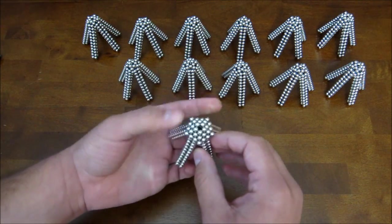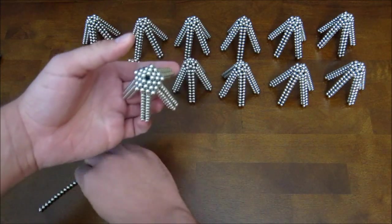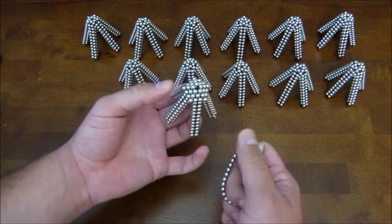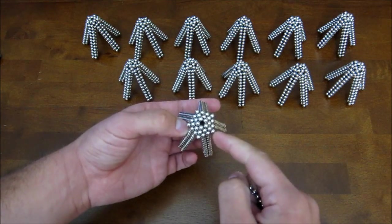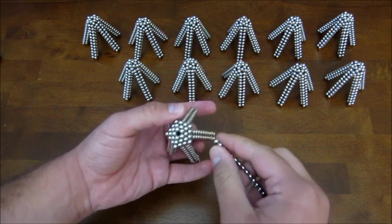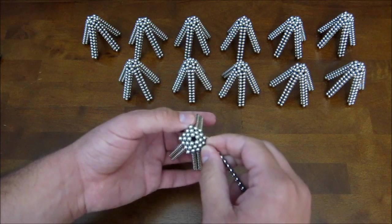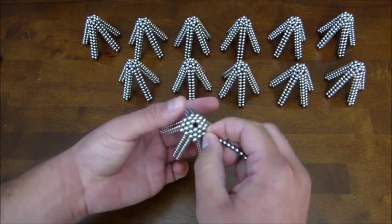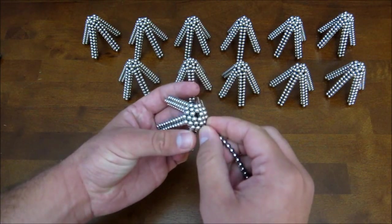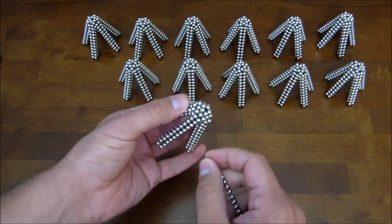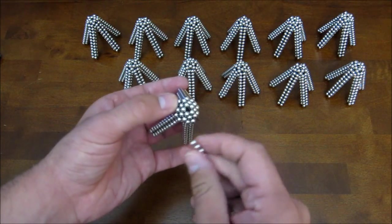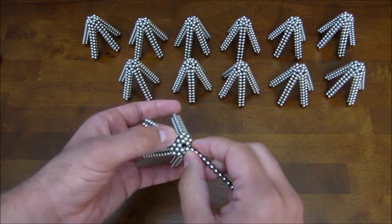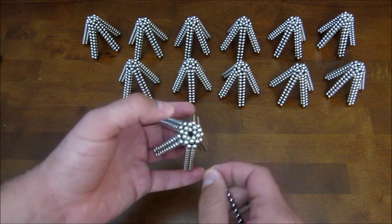Okay. Now flip it back around. And what you're going to want to do next is take a chain and take away the five magnets on the outside corner. Just like that.